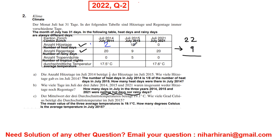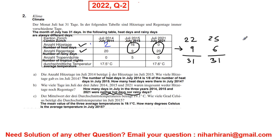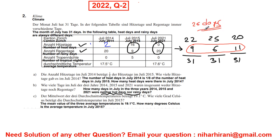For July 2015, 16 plus 9 is 25, and 25 plus 6 gives 31, so 6 days are neither hot nor rainy. For July 2021, 20 plus 0 is 20, and 20 plus 11 gives 31, so 11 days. The sum of these three values is the answer: 9 plus 6 plus 11 equals 26 days. That is my answer for B.